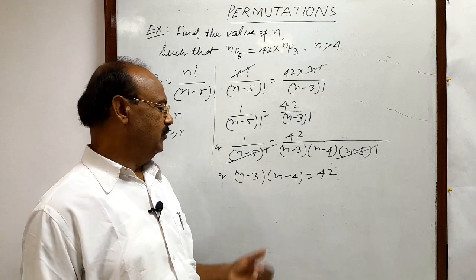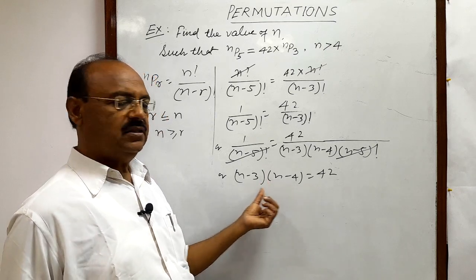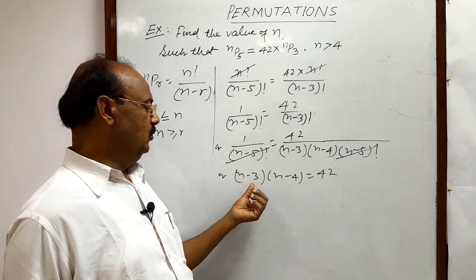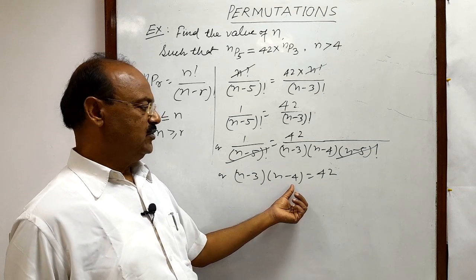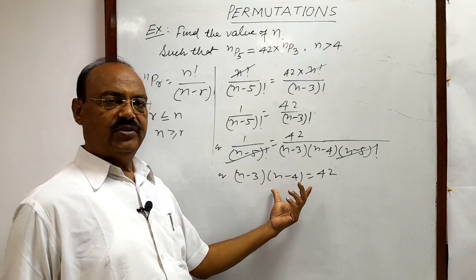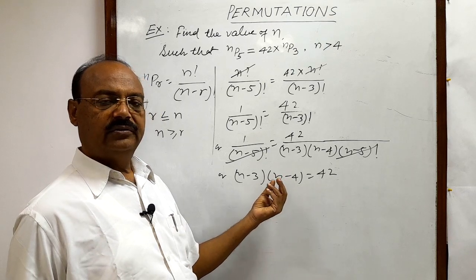There are two methods to find the value of N here. First method is to multiply these two factors. After multiplication, you will get N square minus 7N plus 12. You will get a quadratic equation. And so, by solving this quadratic equation, we will get value of N.